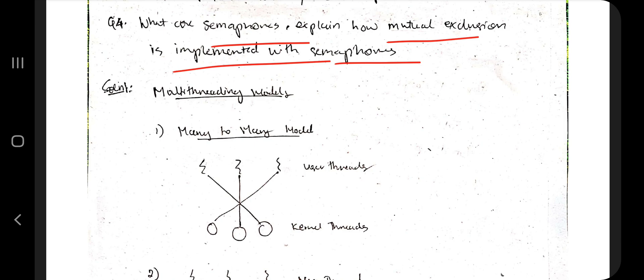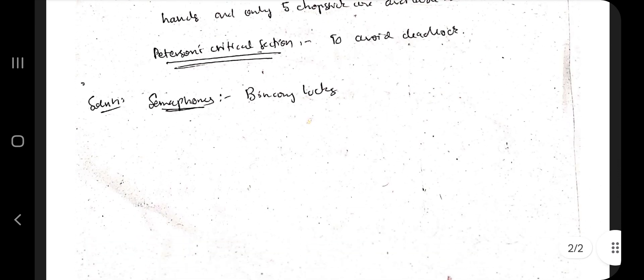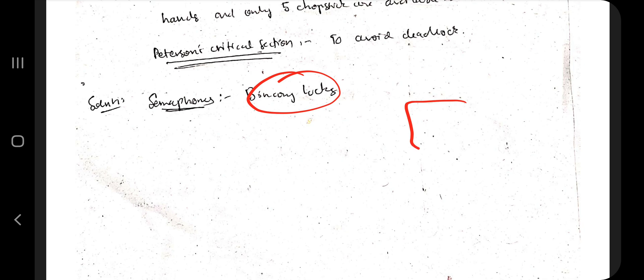What are semaphores? Explain how mutual exclusion is implemented using semaphores. A semaphore is basically a binary lock. Binary lock means if there's a process P1 and a process P2, and this is the resource, if process P1 is using the resource, P2 should not be allowed to access it. This can be implemented using semaphores.